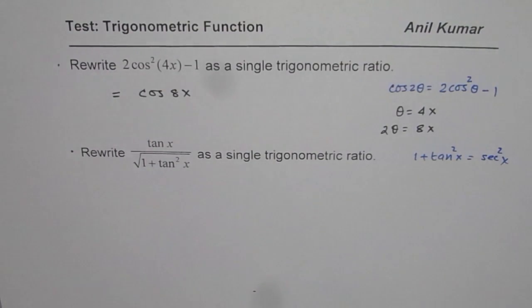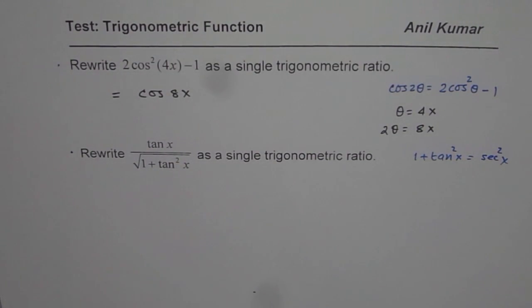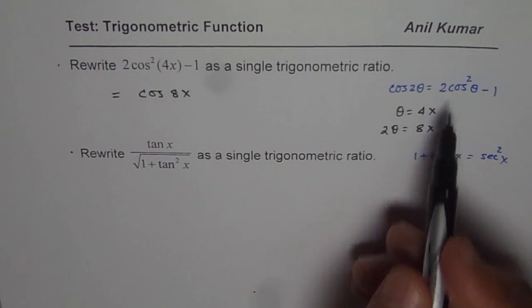8x. Do you see that? So you can rewrite the given expression as cos 8x, right? That is 2 times 4x, using this formula.